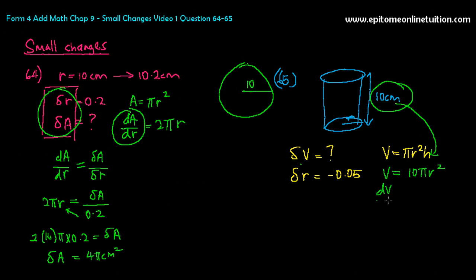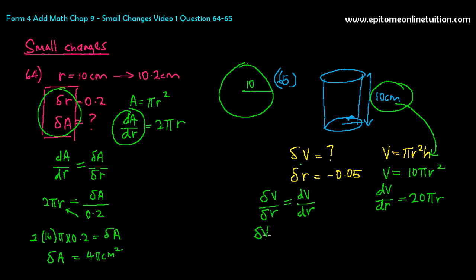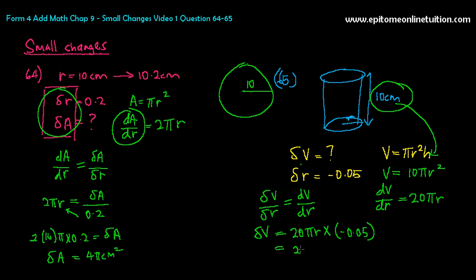Form your approximation: delta V over delta R is approximately equal to dV/dR. So delta V equals 20 pi R times delta R, which is negative 0.05. The original value of R is 7, so that's 20 pi times 7 times negative 0.05, giving negative 7 pi centimeters cubed.